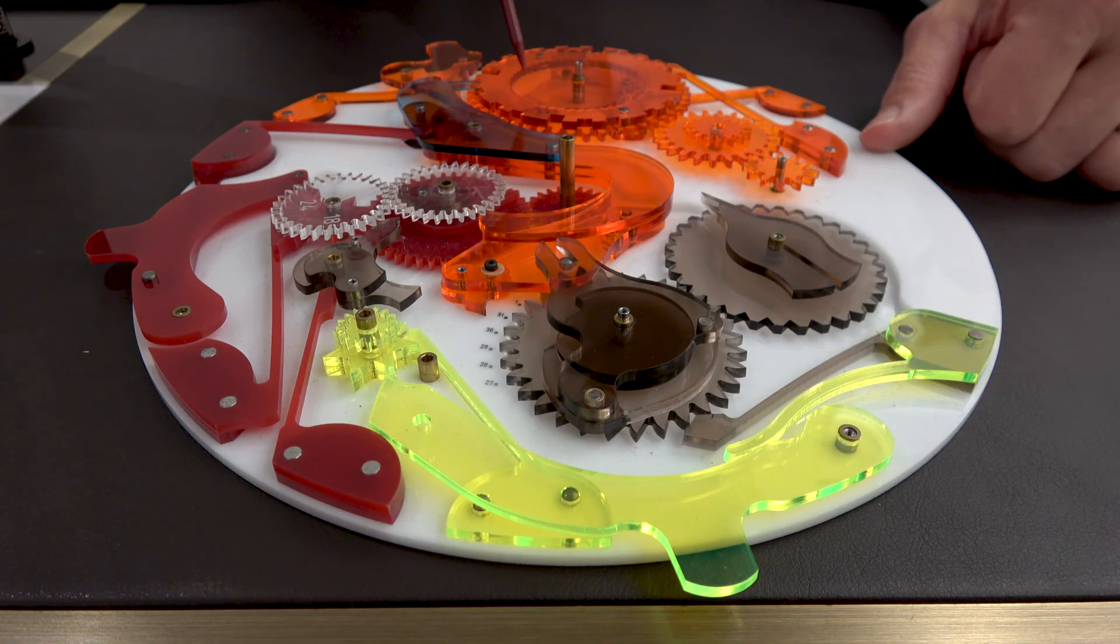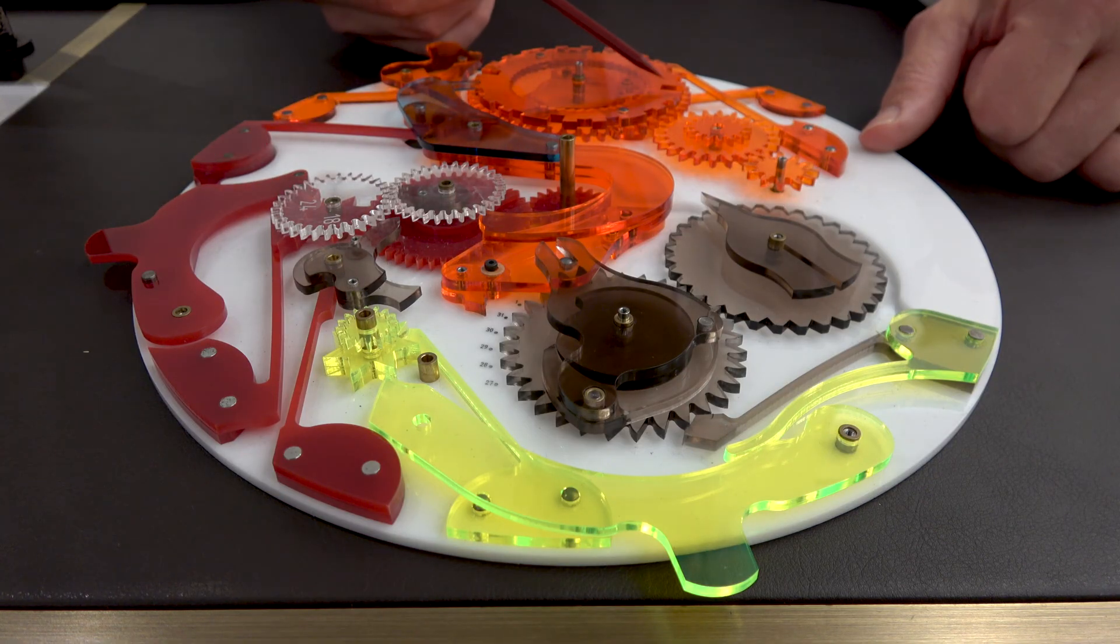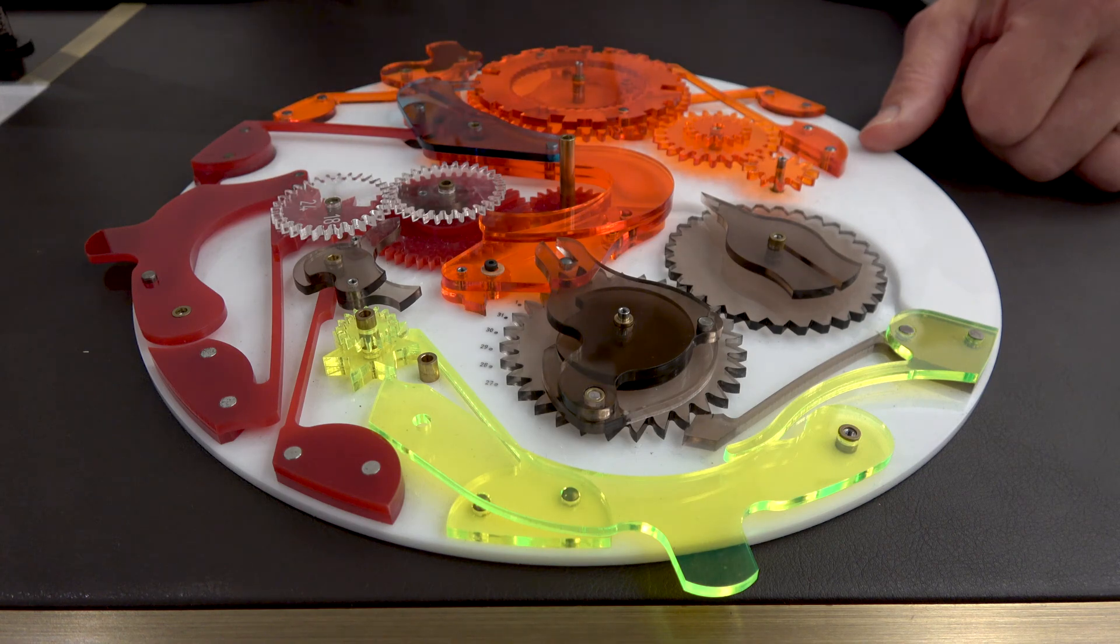In fact, this cam or wheel makes one revolution every four years. We have three of the lowest points represent February 28th, second lowest 29th of February, and all other months with 30, 31 days.